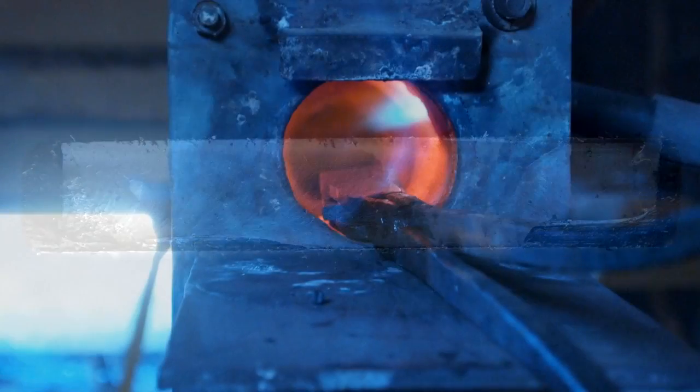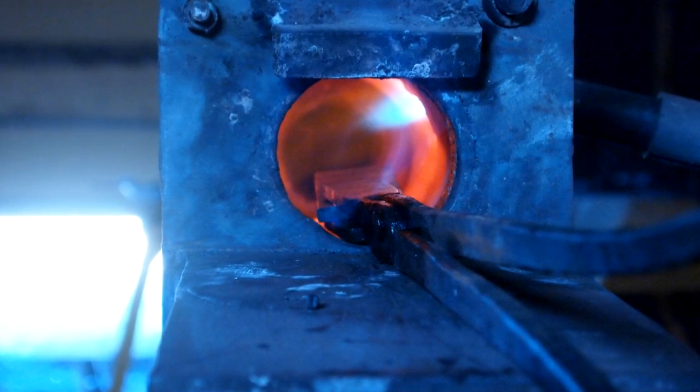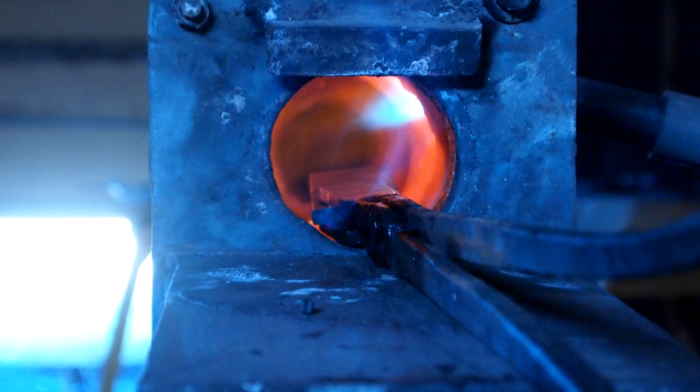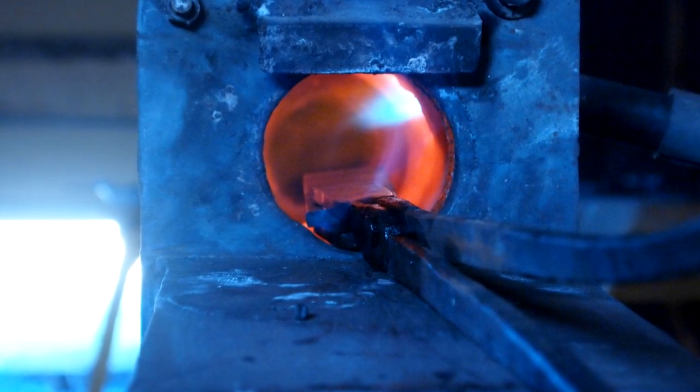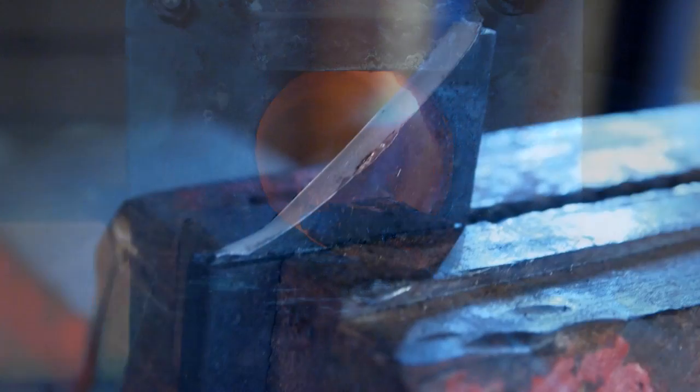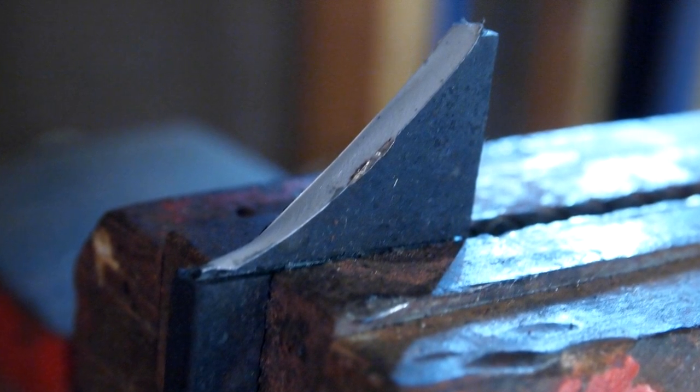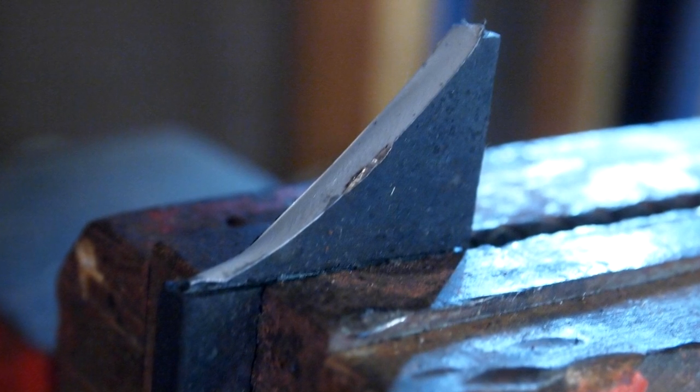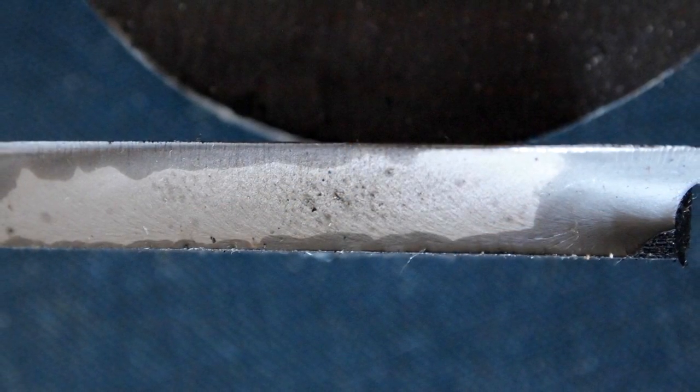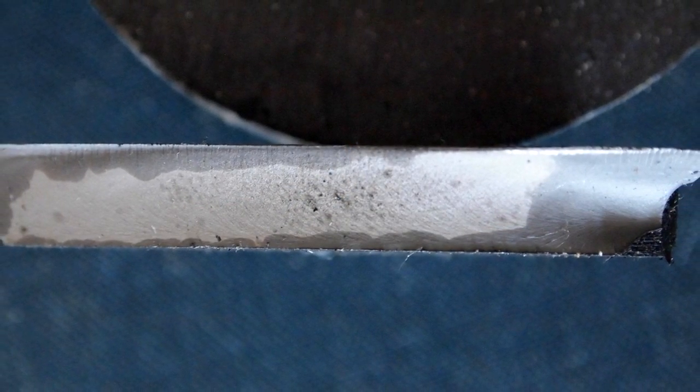Then I repeated the process again, put the piece up to critical temp and then quenched it again. And now it's getting really hard to break. This broke crooked here. And you can see the grain is getting really small.